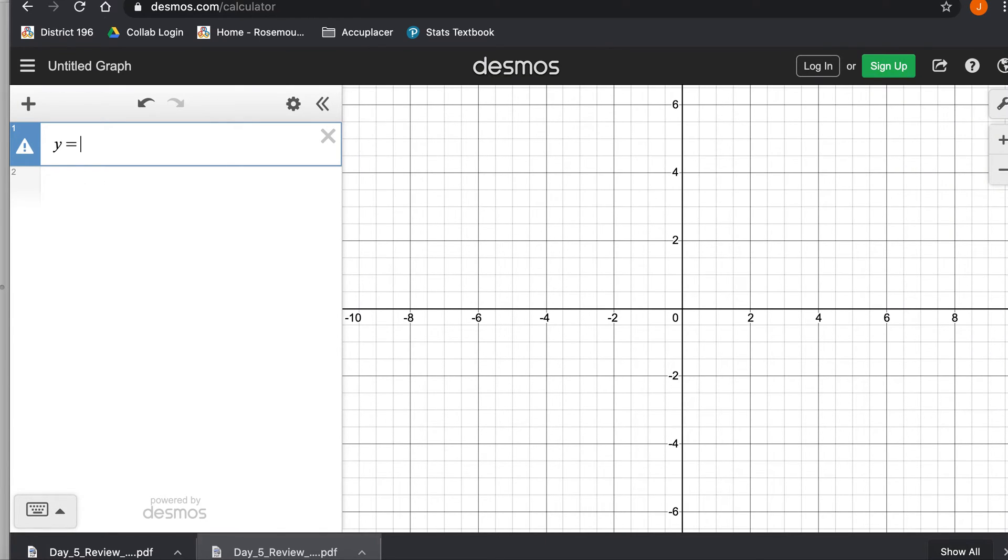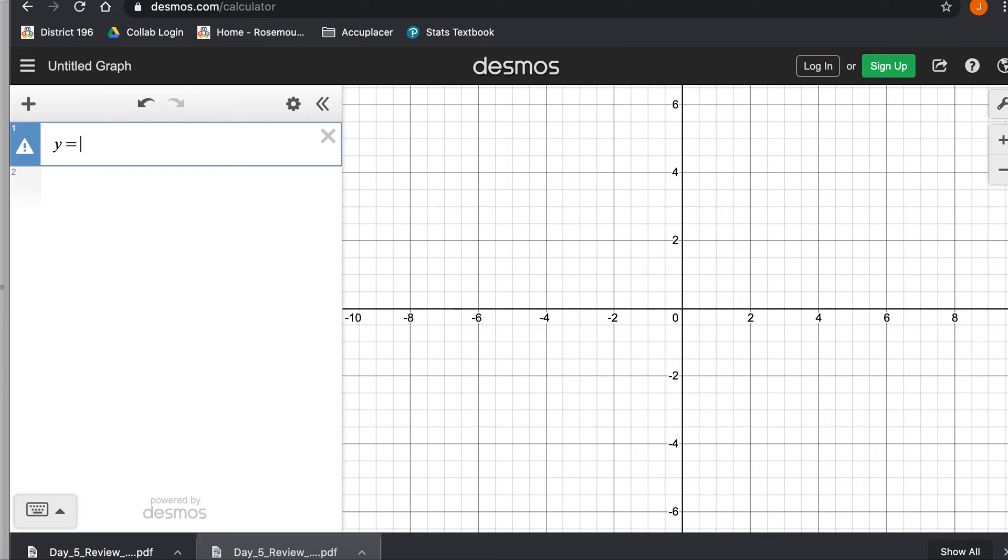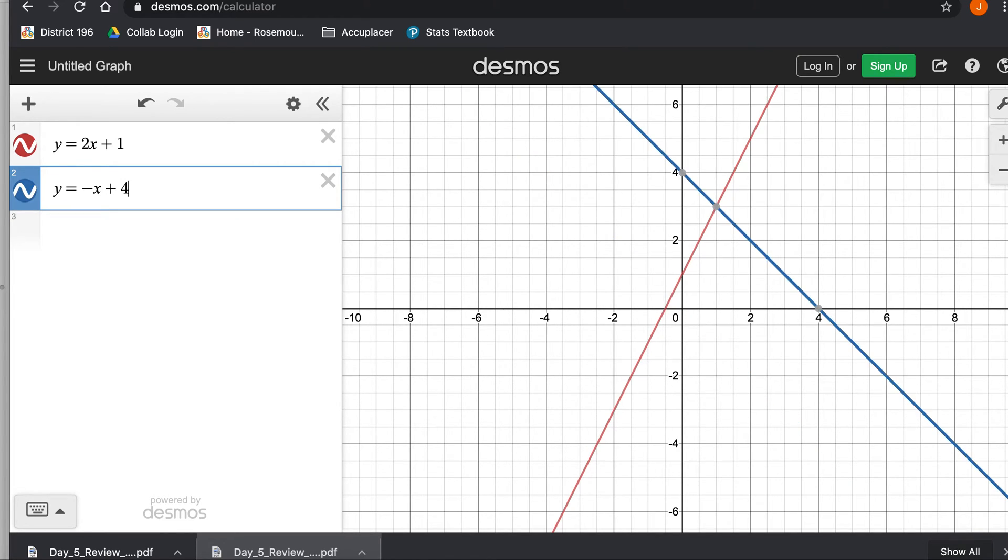So what I'm going to do is just type these equations in. So y equals 2x plus 1 and y equals negative x plus 4. And look at that, it's 1, 3 is where they meet. And so that's your solution by graphing.